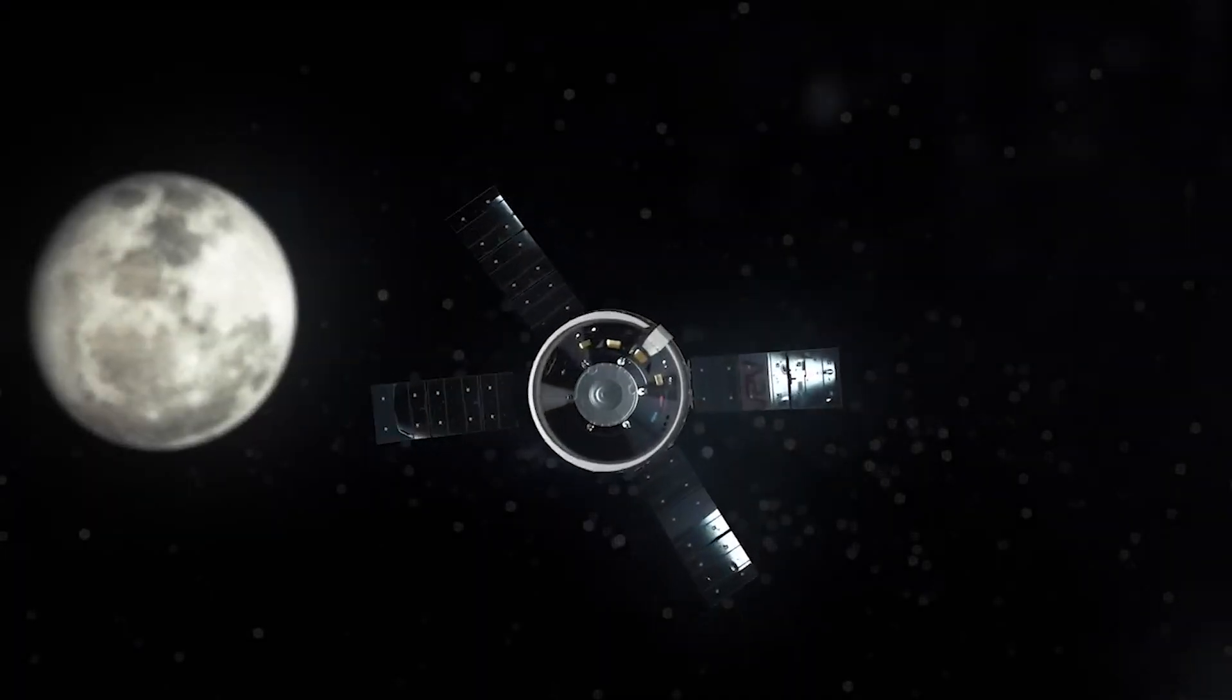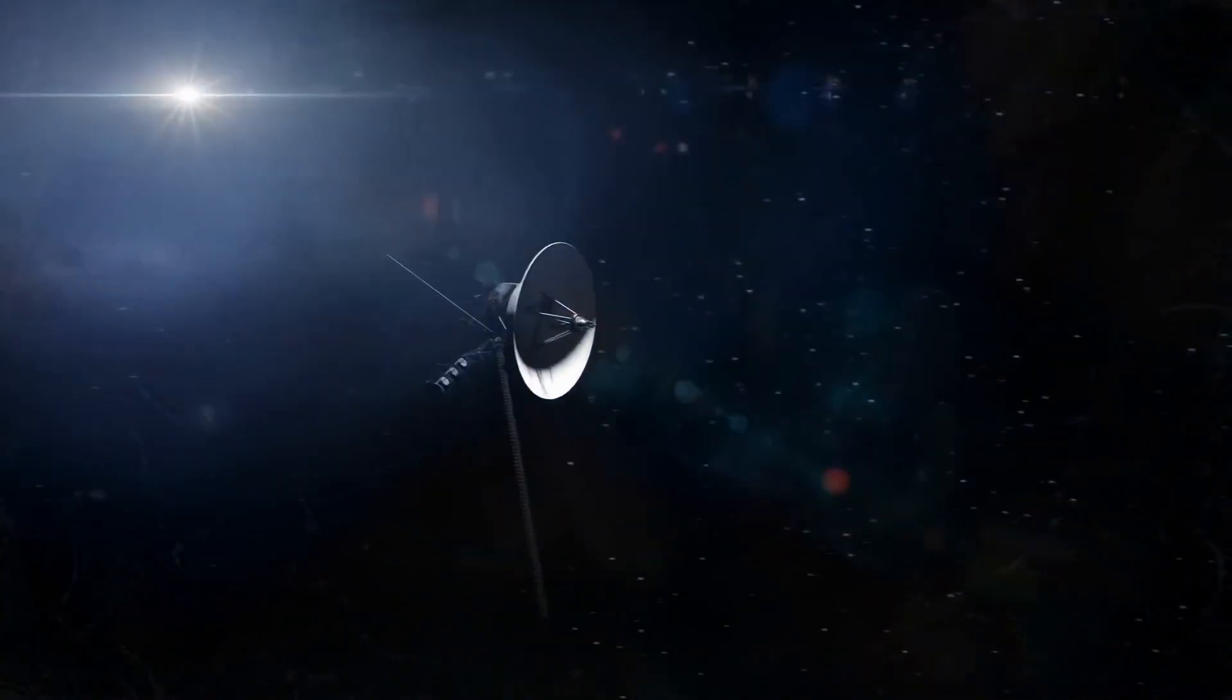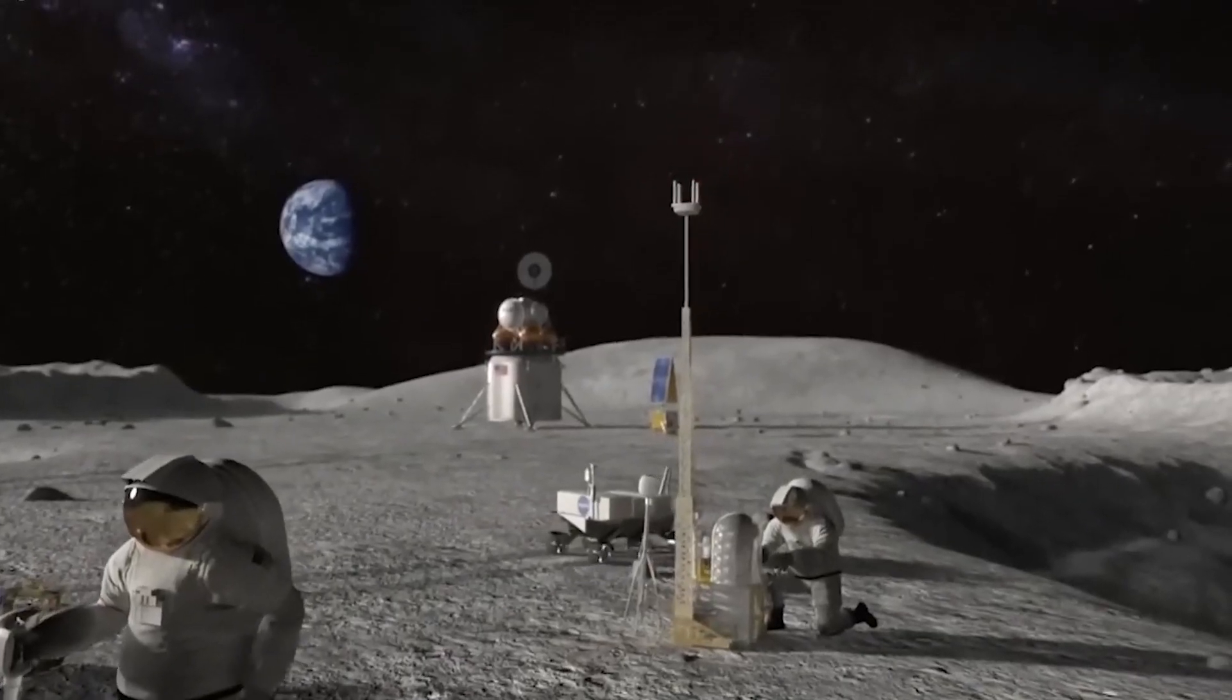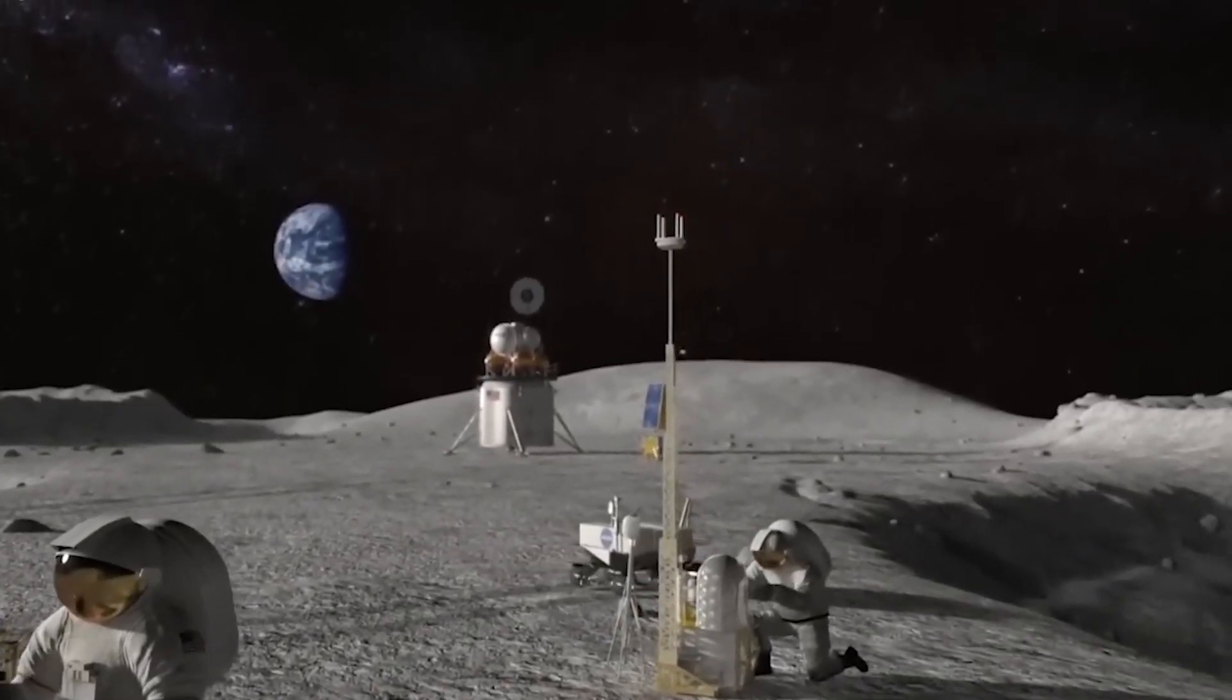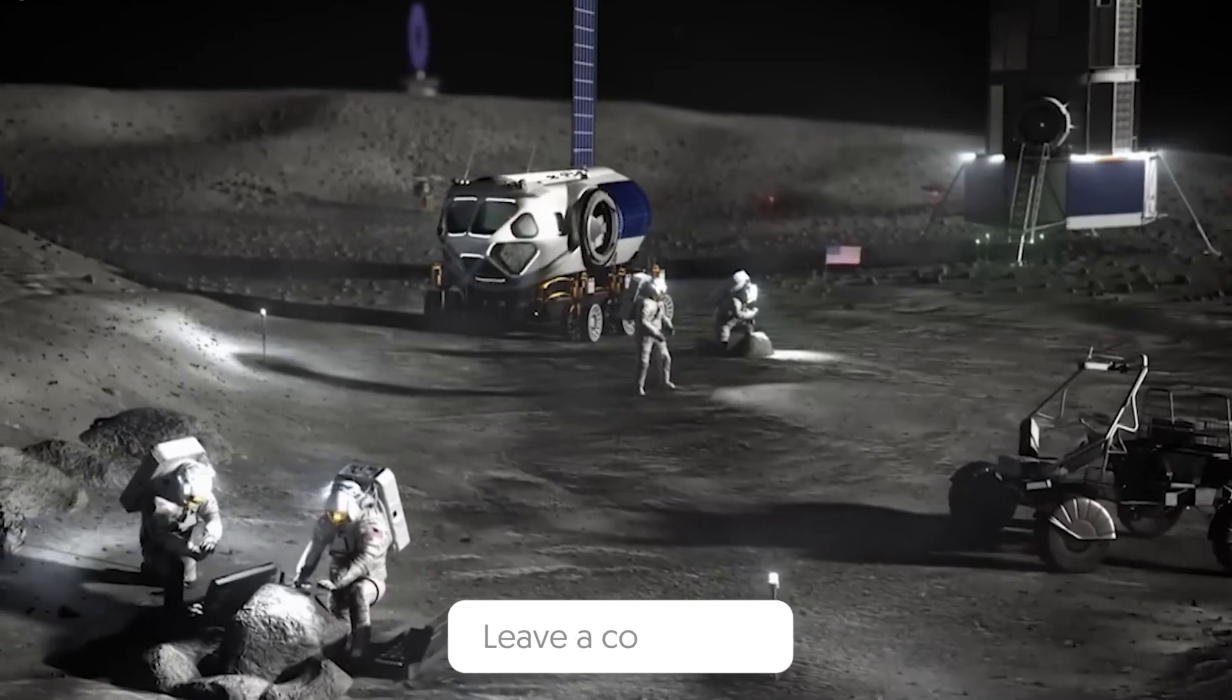If you liked this video, you may also like this one, which talks about a terrifying new signal the Voyager has sent back to Earth. Do you think NASA should set up a permanent space on the Moon? Please share your thoughts in the comments section below.